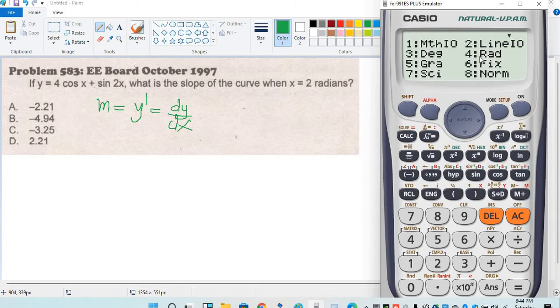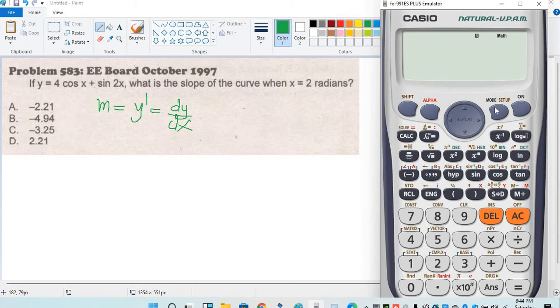Press shift mode, number 4 for radian, then shift derivative, and enter 4 cos x plus sin 2x.